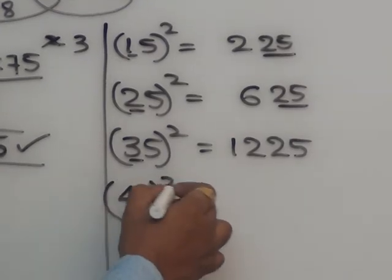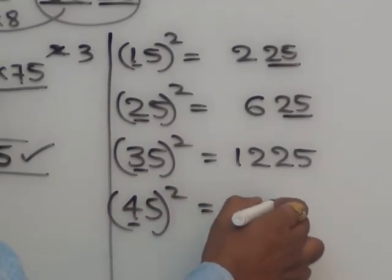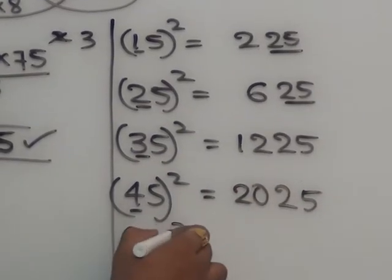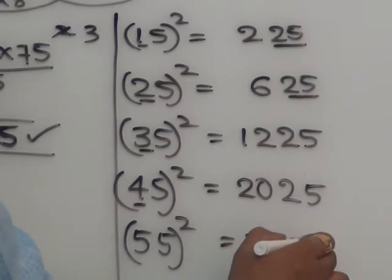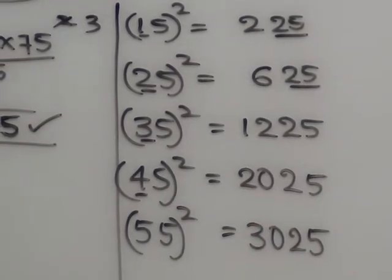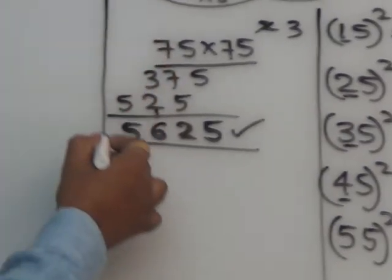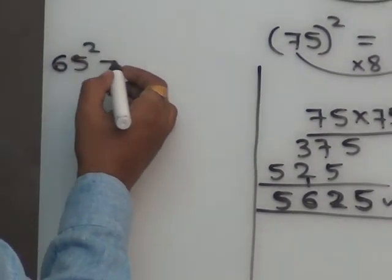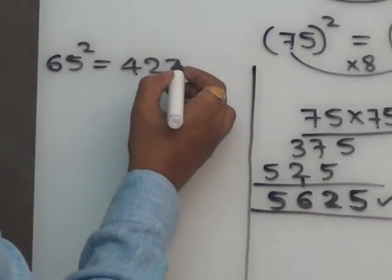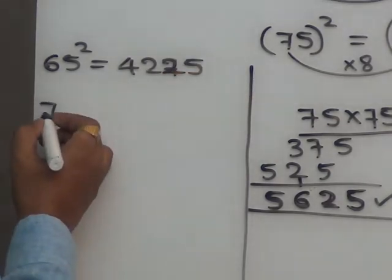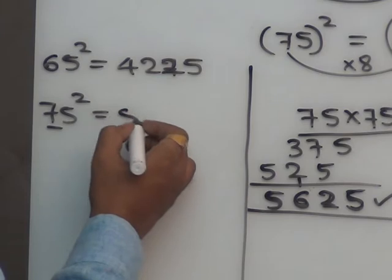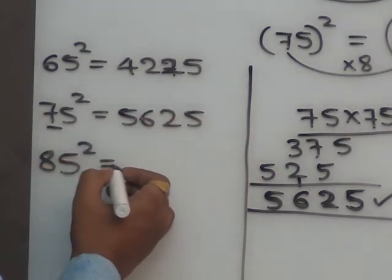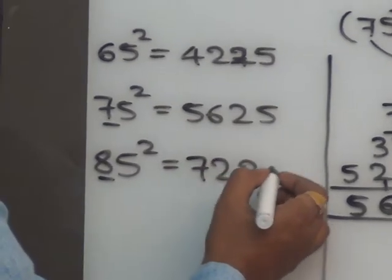45 square — so 4 into 5 equals 20. Answer is 2025. 55 square — 5 into 6 equals 30. Answer is 3025. Follow out to narkadha — yela chayashtu nama. So remaining values — 65 square: 6 into 7 equals 42, answer 4225. 75 square: 7 into 8 equals 56, answer 5625. 85 square: 8 into 9 equals 72, answer 7225.